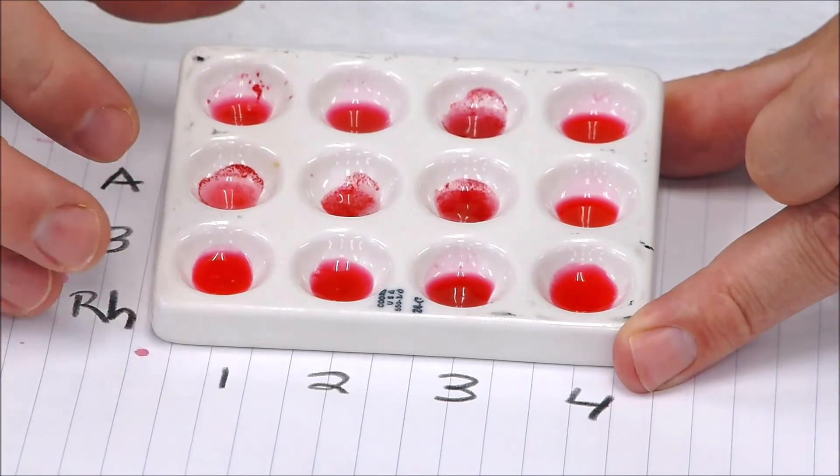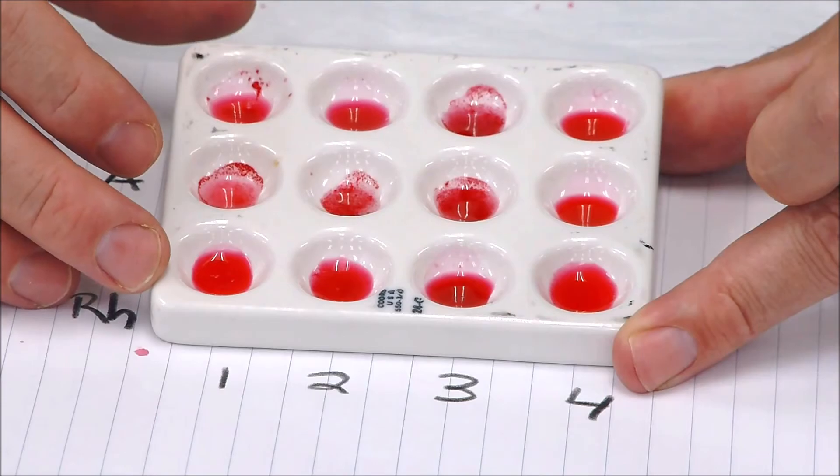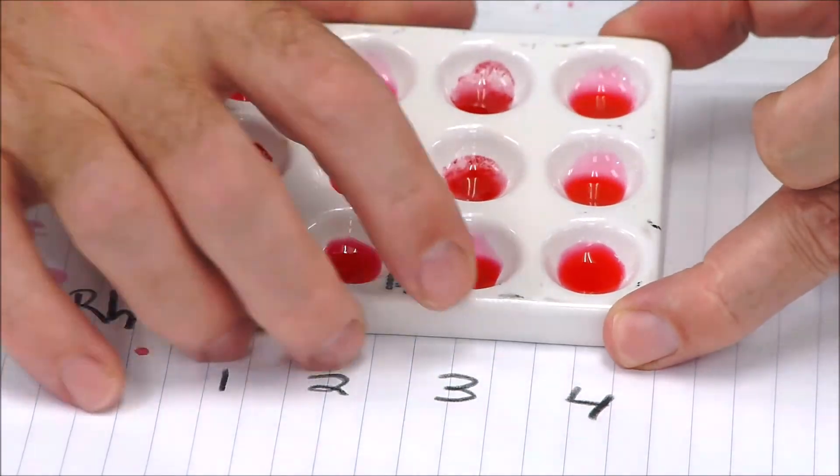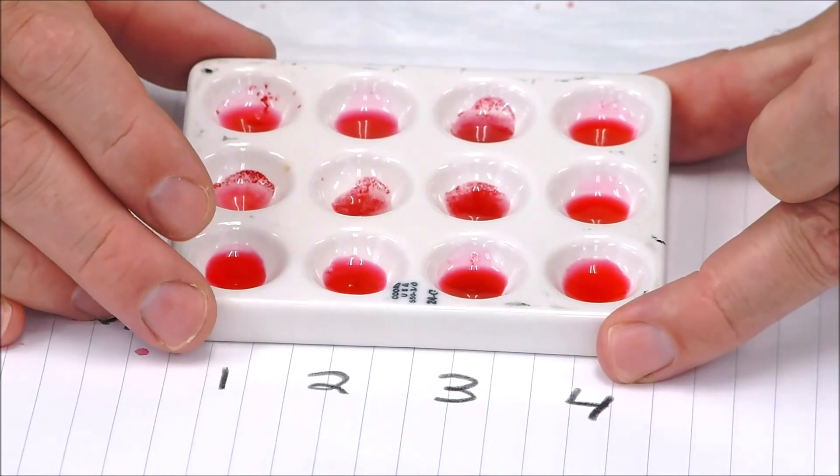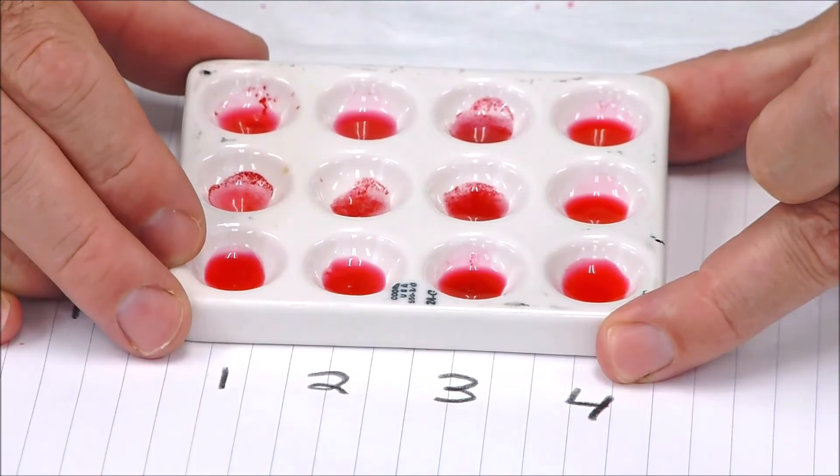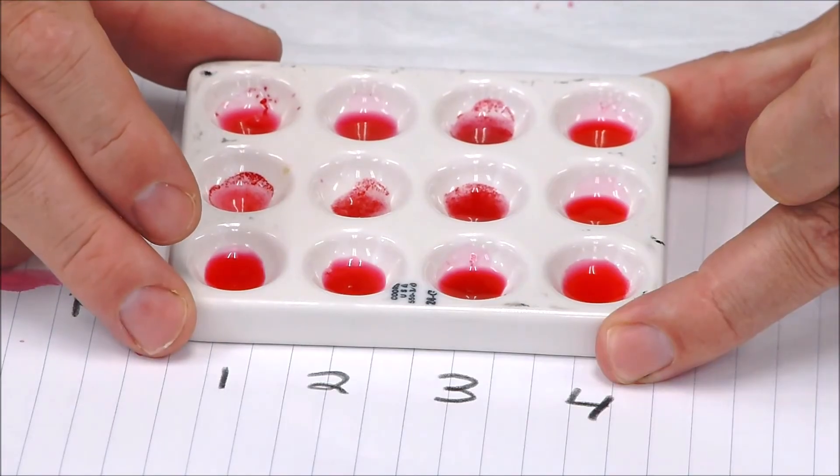Well, as it turns out, this fake Rh antigen doesn't work very well and it's kind of gelled uniformly across except for in the third well. So we'll just call anything that gels positive, okay? So if we have B and we have gelling down here on Rh—it would normally be agglutination—we would call that B positive blood.